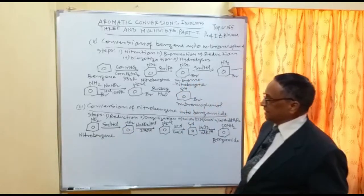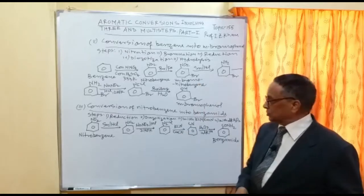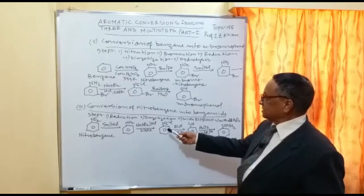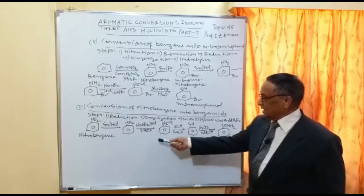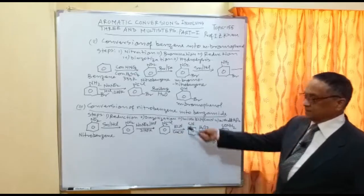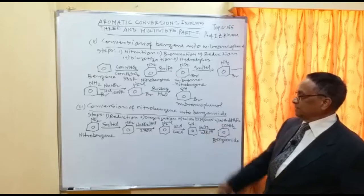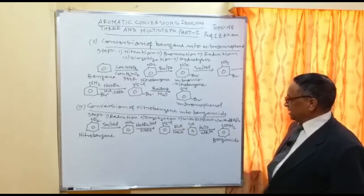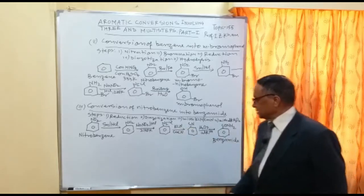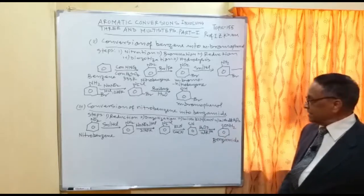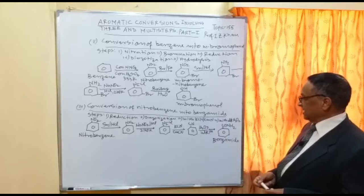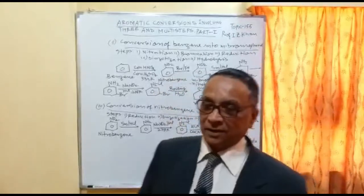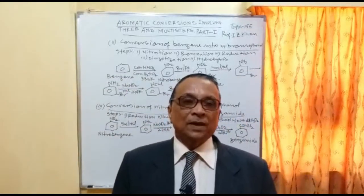Nitrobenzene is treated with Sn/HCl to give aniline. That aniline is treated with NaNO₂ in the presence of HCl at 278 K — diazotization takes place and you get the diazonium salt. Then it is treated with KCN — CN is substituted in place of N₂Cl — giving a product with a CN group attached to the benzene ring. Finally, treatment with hydrogen peroxide in alkaline medium gives benzamide.